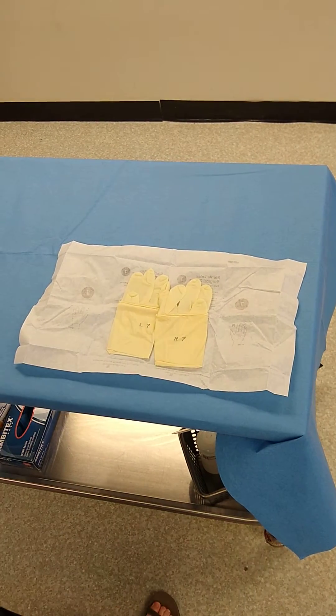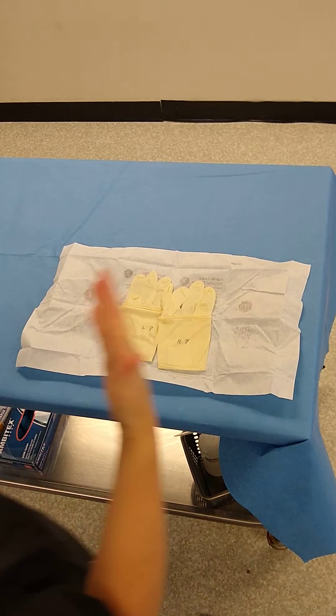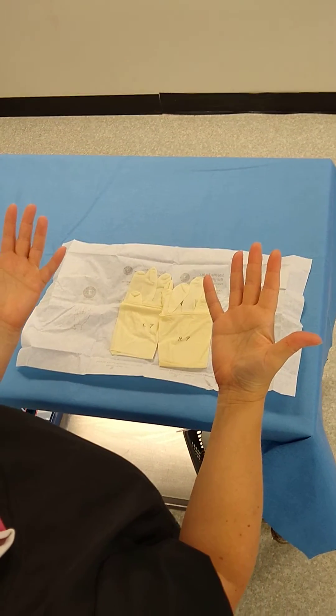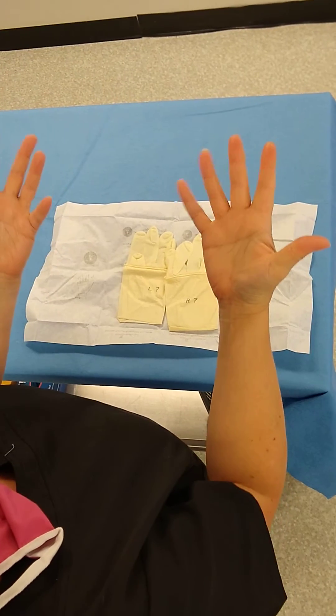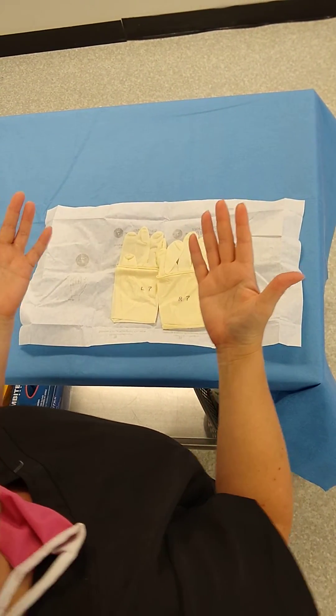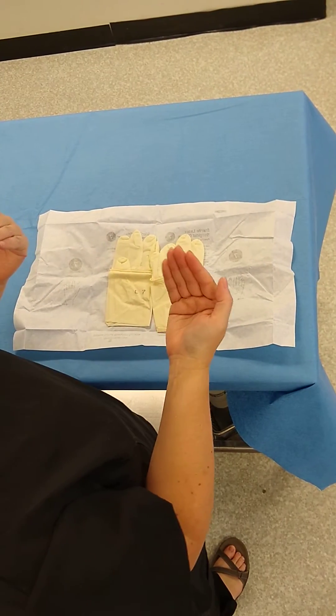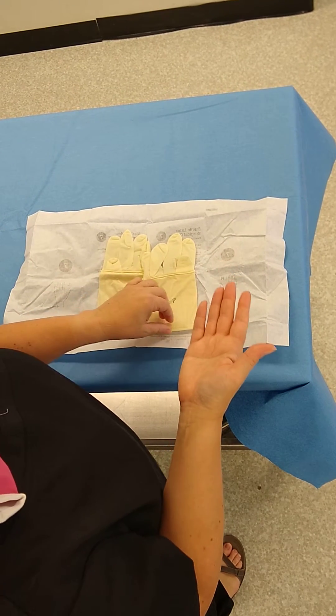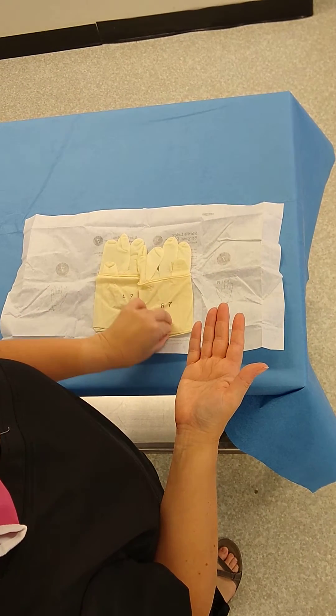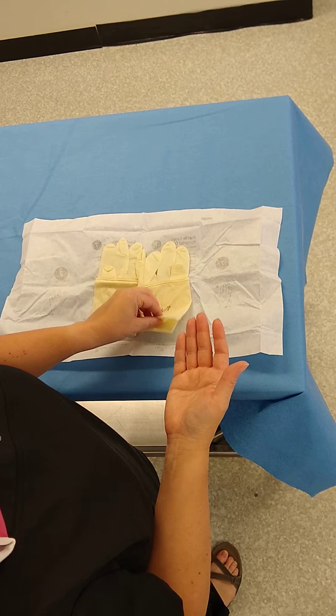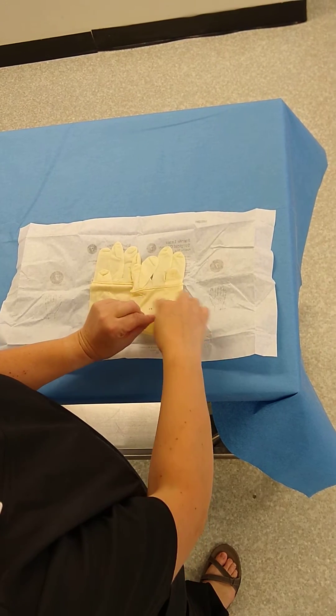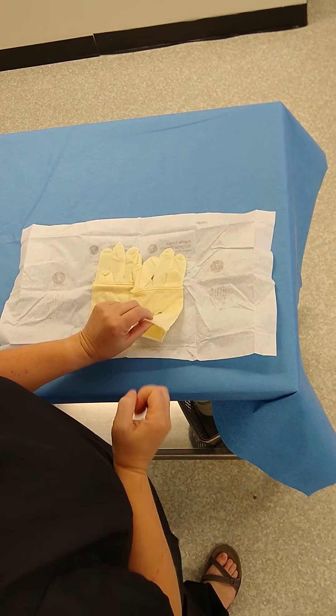I'm going to pretend that I scrubbed and I'm now here to put my gloves on. When you open glove your hands, you can never make them absolutely sterile. So you cannot touch the outside portion of your gloves. I'm going to grab the inside lining or edge of my gloves. This is the inside of your glove; that's the outside.